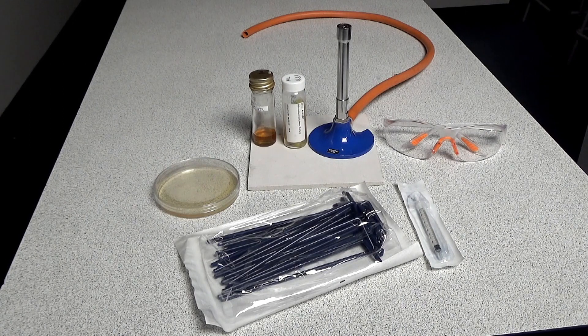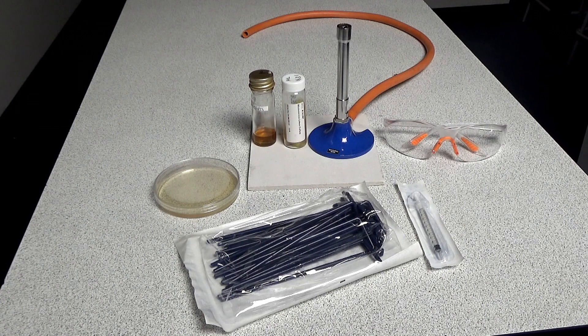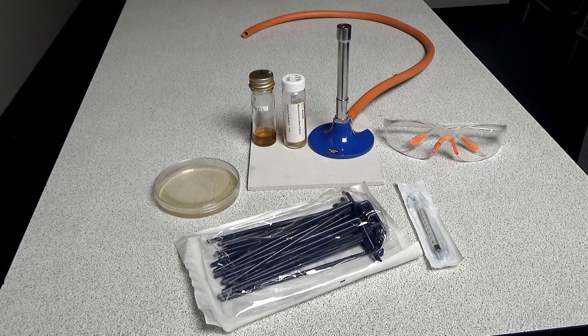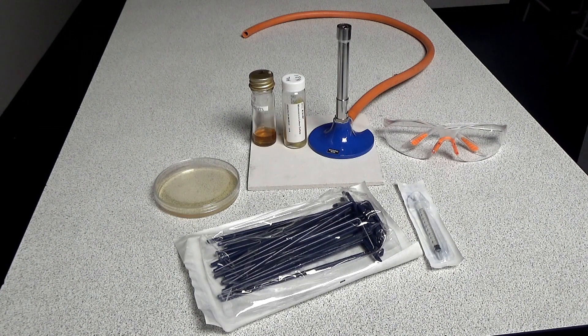For this practical you'll need a Bunsen burner and heat proof mat, safety goggles, a nutrient agar plate, a bacterial culture, a sterile L-shaped spreader and a sterile one milliliter syringe.